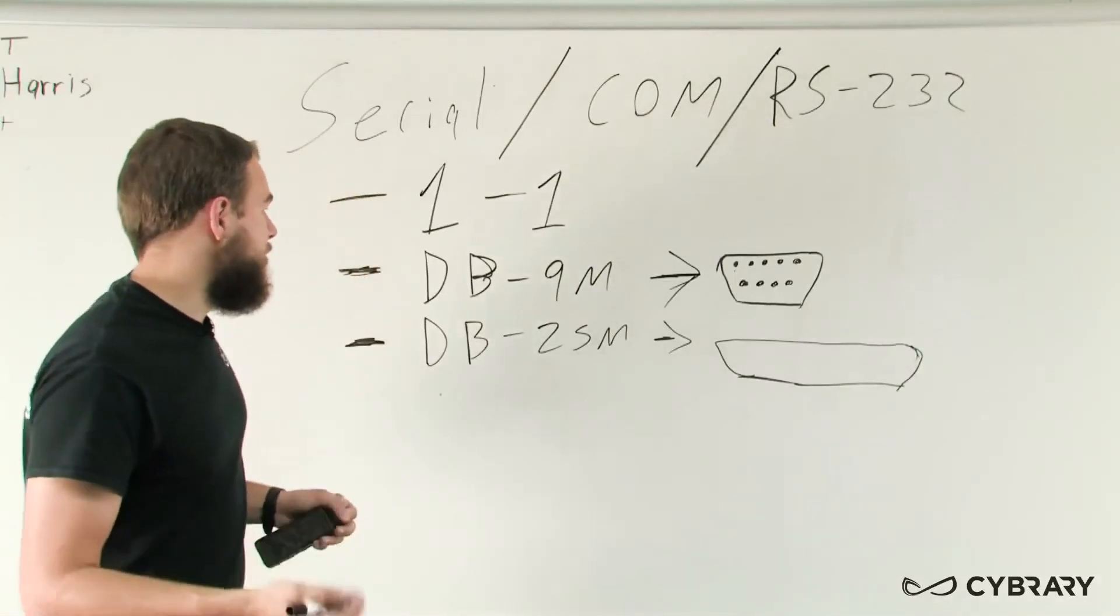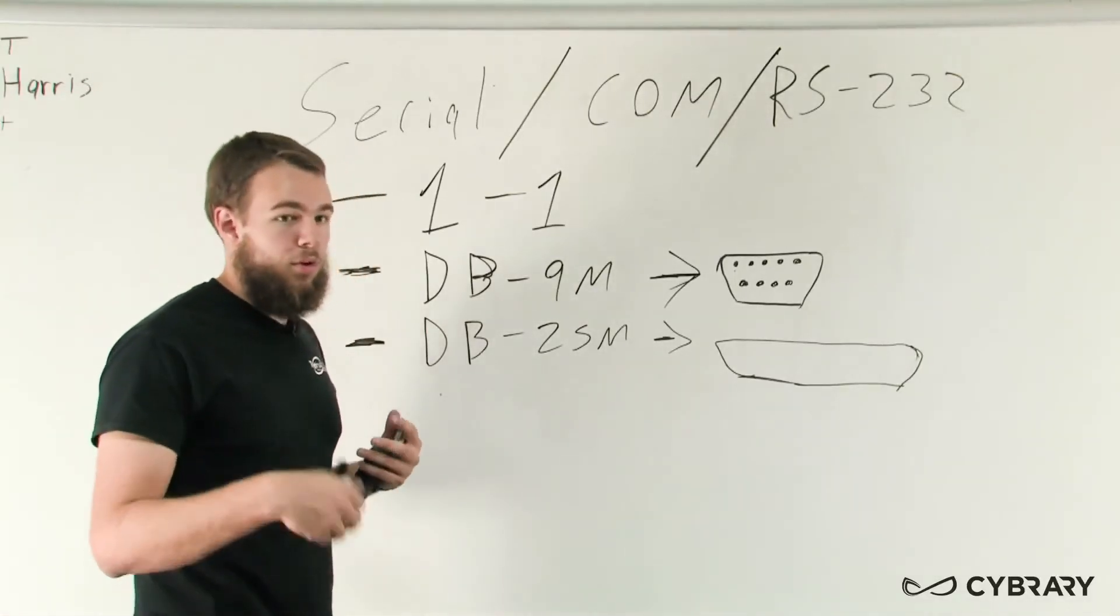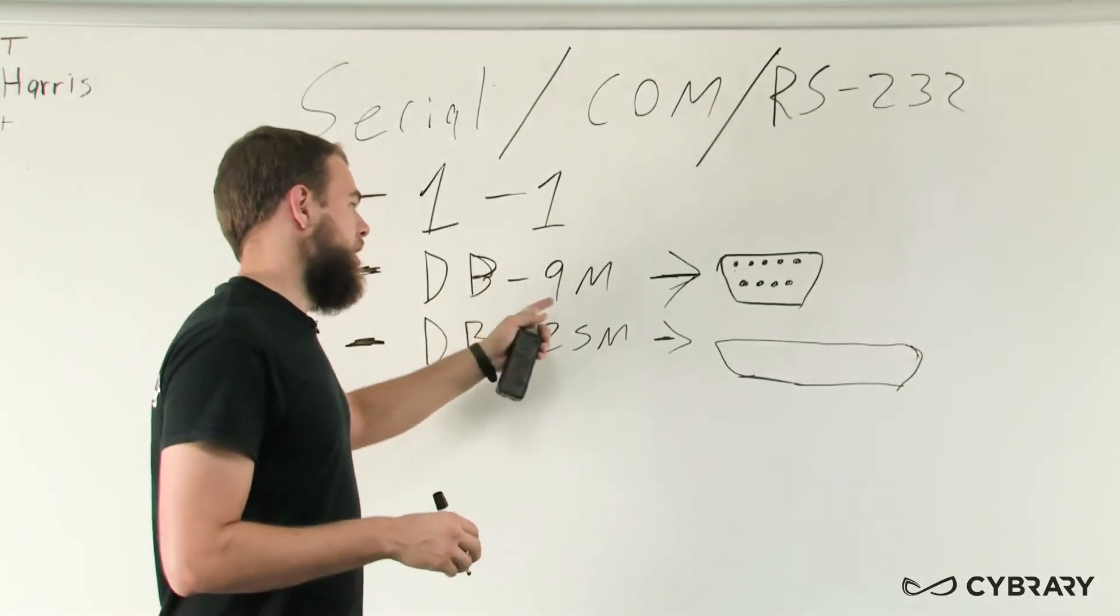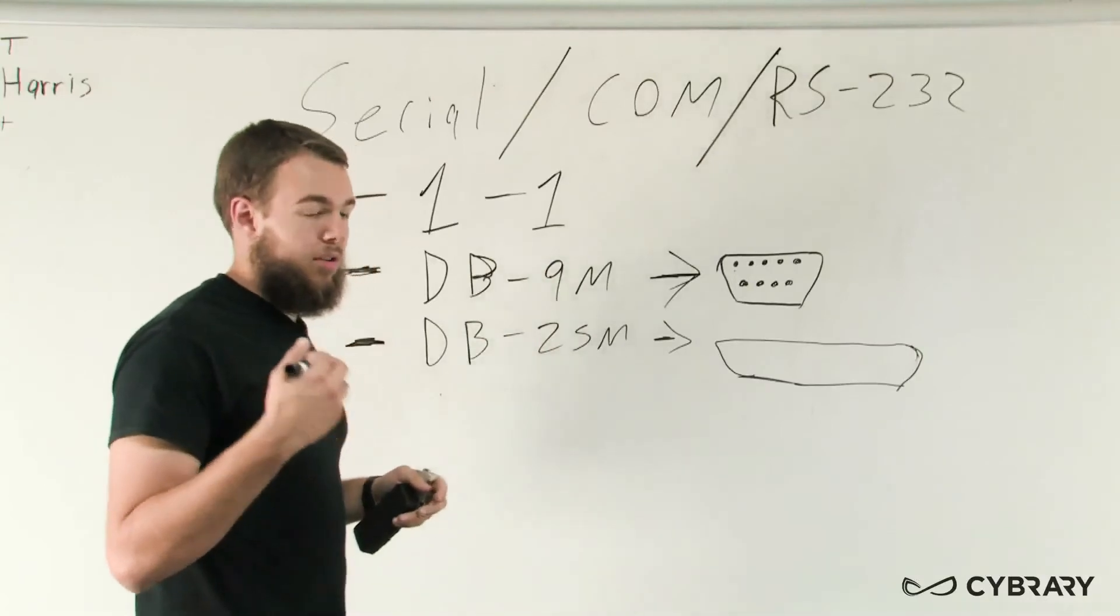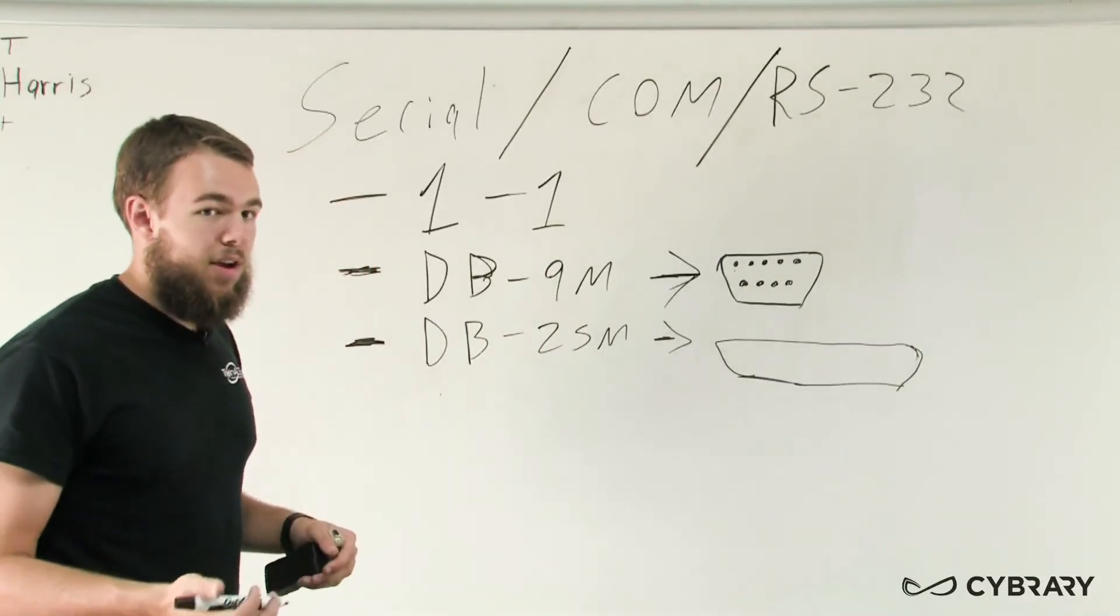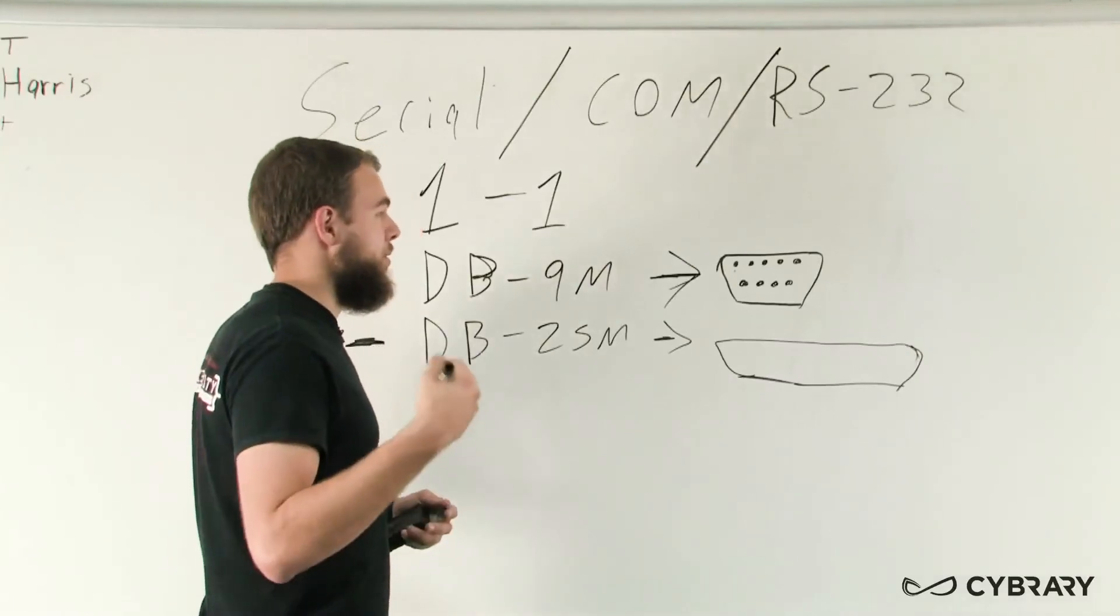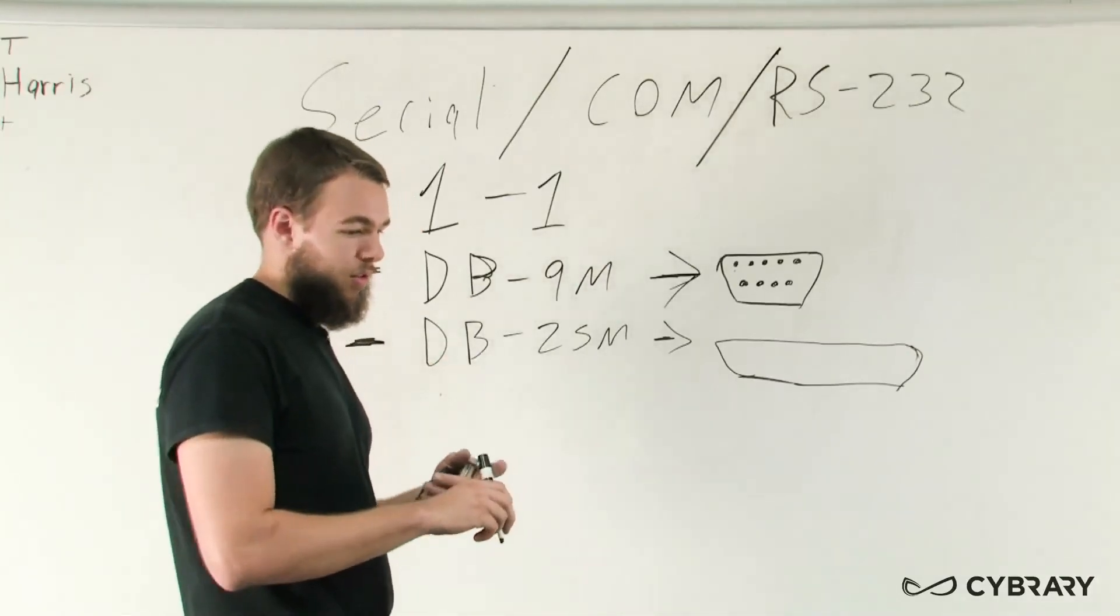We just want to make sure that when we're using serial cables, we're using the right cable for the job. We're making sure that we have the right type of ends, our DB9 or DB25, so that we're able to complete our job and we're able to use those cables for the right purpose.